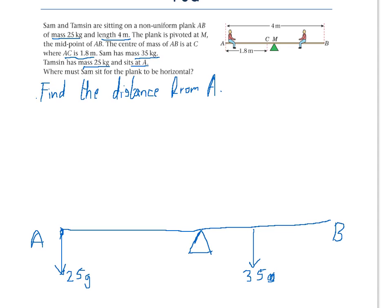We are also told that the center of mass for the rod AB is at point C, and the weight of the rod is going to be 25g. So we have now got all the masses converted to weights and they are all put on our diagram.